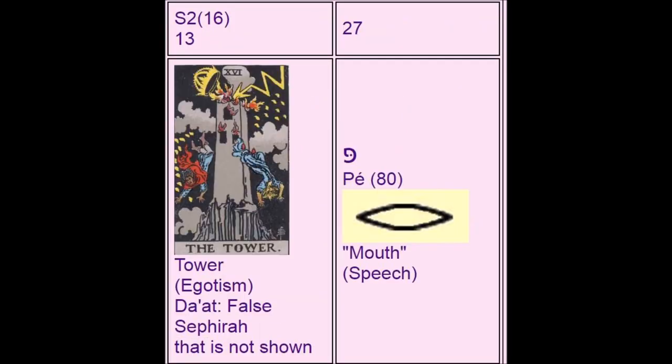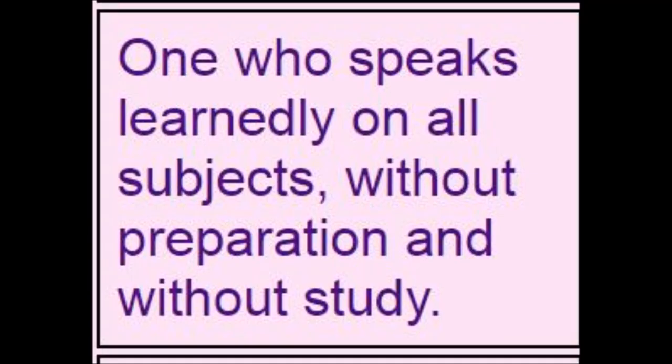The next card, S3, is the Star, which I'm calling Intuition. It comes from the alphabet symbol Tzadi, the fish hook — interesting, like God fishing for us from the stars. The statement relating to this is 'one who foresees all future events which do not depend on a superior free will or on an undiscernible cause.' S2 is the Tower, which I call Egotism. It sits on the point of Da'ath, which is often called the false sephirah and is either darkened or not shown at all. The letter of the alphabet is Pe, meaning mouth or speech — you could imagine that those who think they know the truth want to mouth off about it. The statement relating to that is 'one who speaks learnedly on all subjects without preparation and without study.'